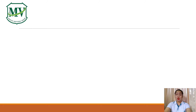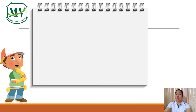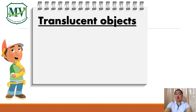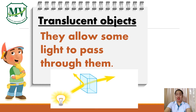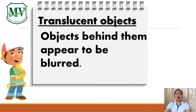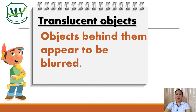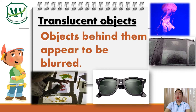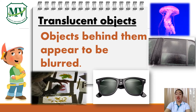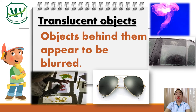We are already done talking about transparent objects. For today's topic, we will learn about translucent objects. Translucent objects are objects that allow some light to pass through them. Remember, they only allow some light to pass through them. They are not the same as transparent objects, because transparent objects allow all light to pass through them. Objects found behind translucent objects appear blurred because they only allow some light to pass through. Examples of translucent objects are tracing paper, sunglasses — which are used to protect our eyes from glaring sunlight — jellyfish, and frosted glasses. Frosted glasses are used to have some privacy.